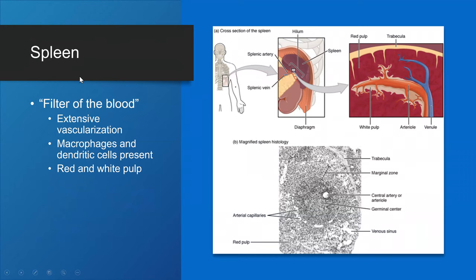The spleen is part of the lymphatic system and is the biggest organ of the lymphatic system — it is a filter of the blood. It has very extensive vascularization with lots of blood vessels, and also contains macrophages and dendritic cells, which are part of the immune response. The spleen is made of red pulp and white pulp. Red pulp has lots of venules, while white pulp has lots of macrophages and dendritic cells.